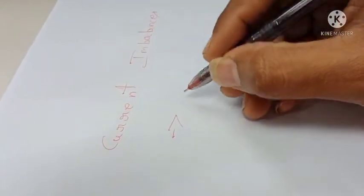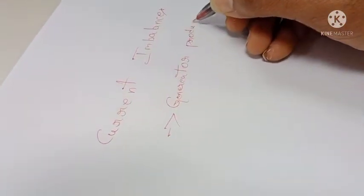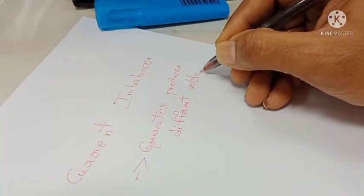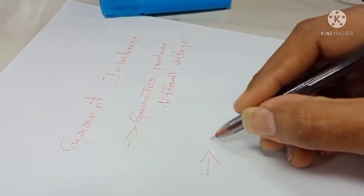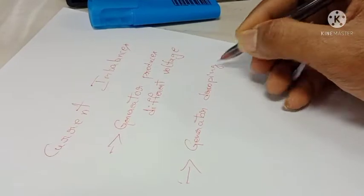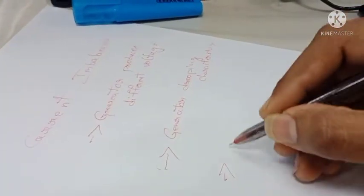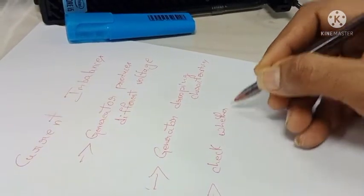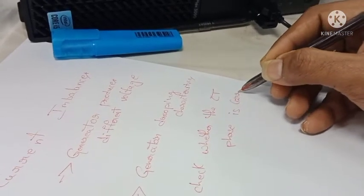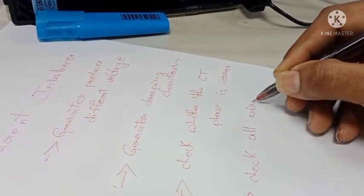These are the troubleshooting points. The first point: check whether the generators are producing different voltages. The second point: check the generator drooping characteristics — compare the characteristics of the generators to see whether all generator behaviors are the same. The third point: check whether the CT phase connections are correct, as they can sometimes be changed during maintenance.